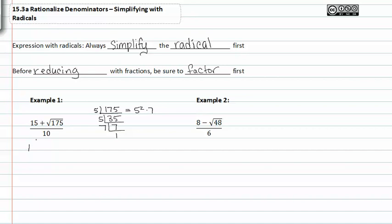Let's go ahead and rewrite our fraction with this in mind. Now that we know what the prime factors of 175 are we can simplify this radical.